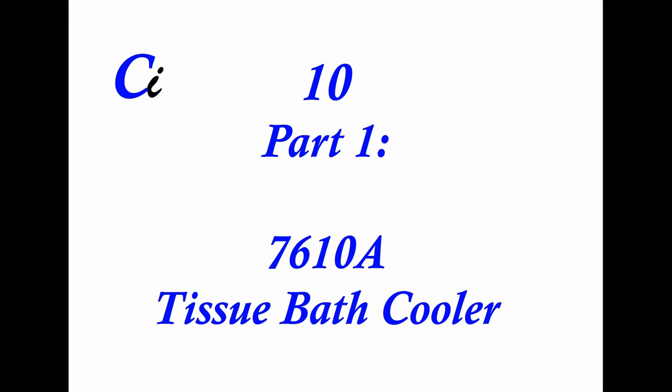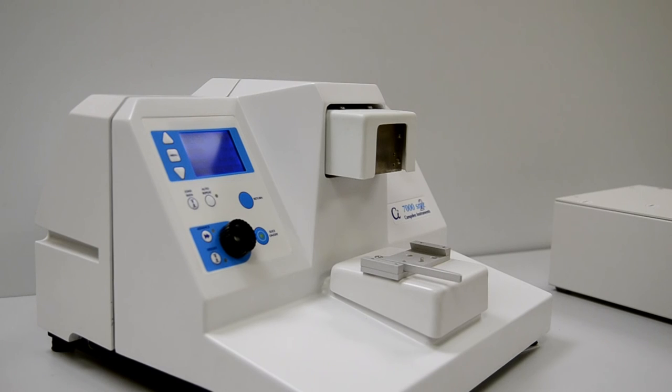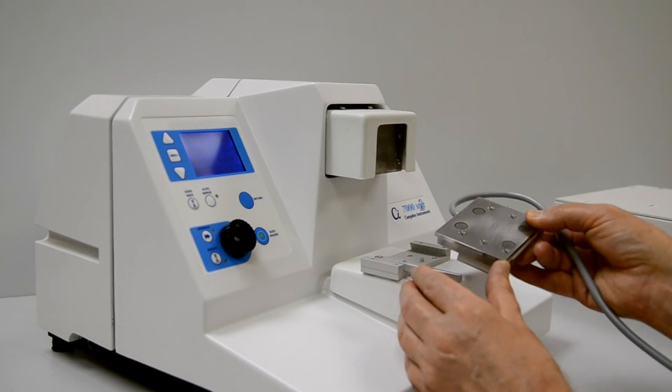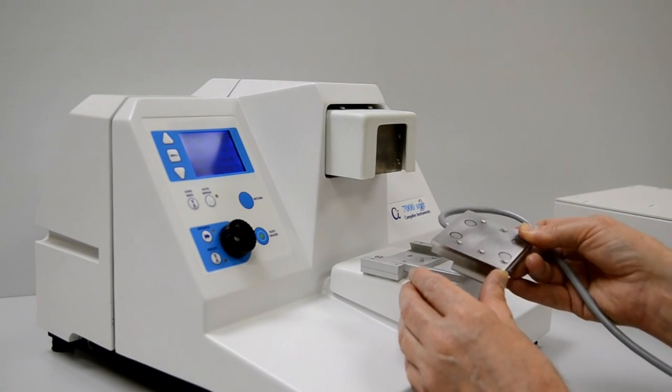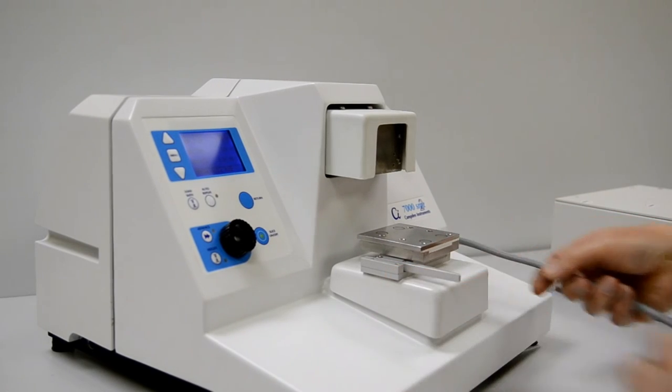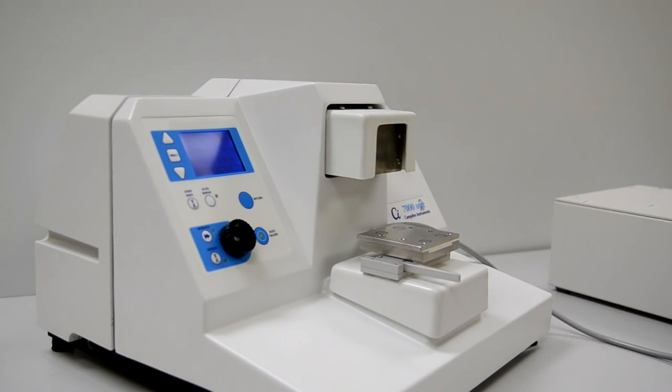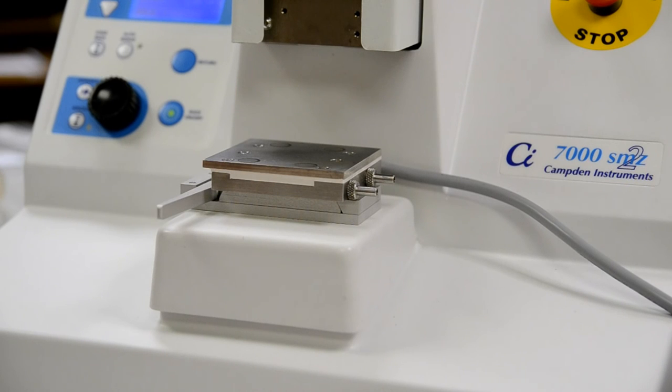The 7610A cooled tissue bath was mentioned briefly earlier in this video. This fits to the slicer in place of the ice surround outer bath and accepts the same standard inner bath and specimen holders. Once fitted, it will allow you to control the temperature of the fluid in the inner bath, thus helping to prolong the viability of the slices being cut.